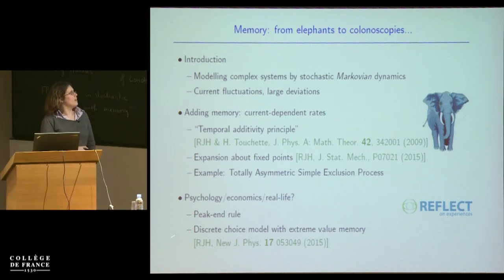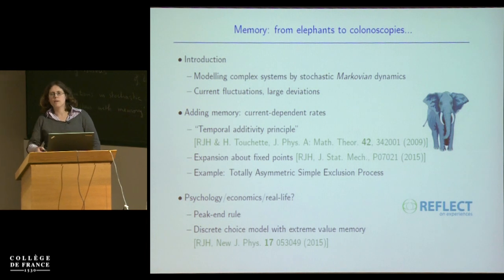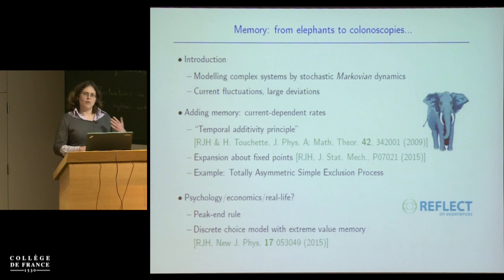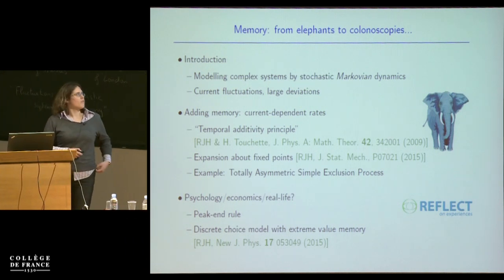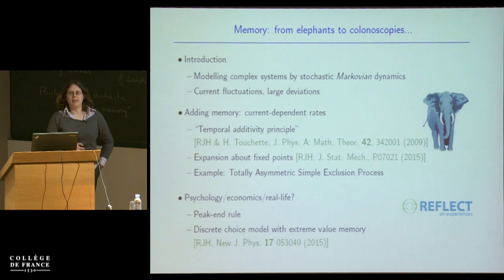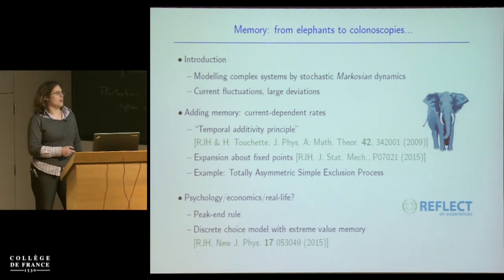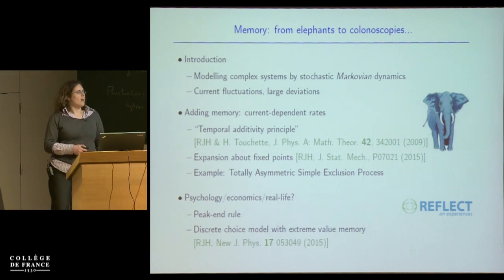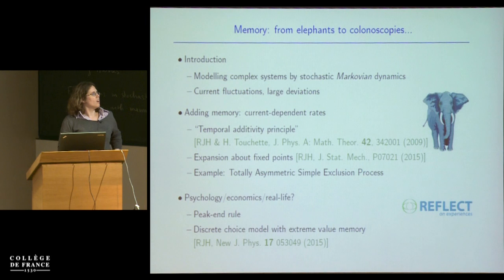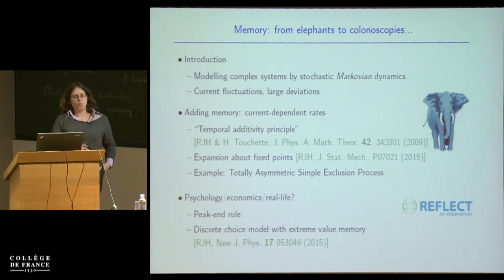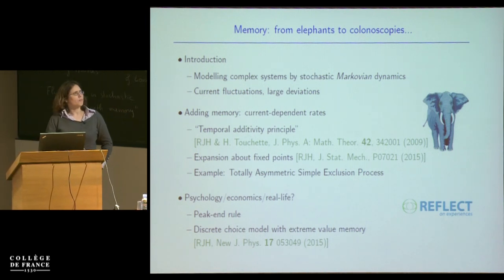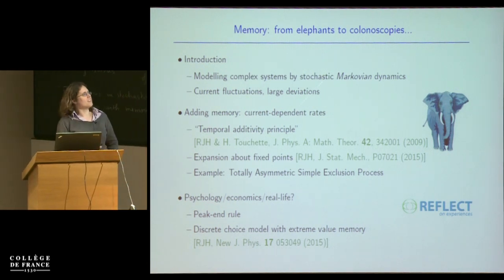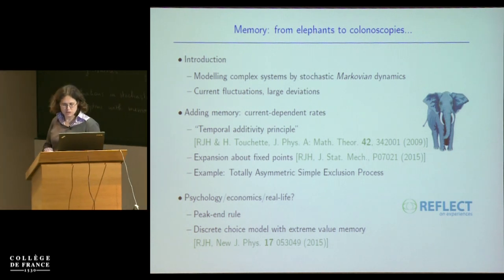In the second part, which will be slightly lighter and more applied, I'll talk about some work from an interdisciplinary project relating to memory in real life — or at least how people in psychology and economics think memory in real life looks. I'll describe something called the peak-end rule, and then motivated by that, we'll look at a very simple discrete choice model with extreme value memory. Along the way there'll be a very tenuous link to elephants and a somewhat less tenuous link to colonoscopies.